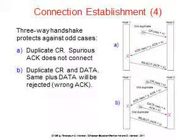TCP uses this three-way handshake to establish connections. Within a connection, a timestamp is used to extend the 32-bit sequence number so that it won't wrap within the maximum packet lifetime, even for gigabit-per-second connections. This fix is described in RFC 1323, called Protection Against Wrapped Sequence Numbers. TCP originally used the clock-based scheme described earlier for choosing initial sequence numbers.